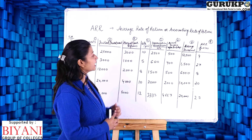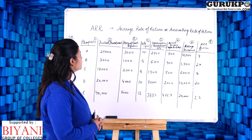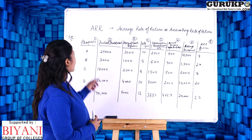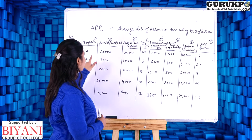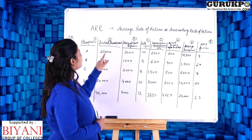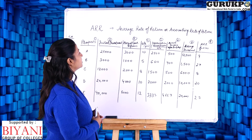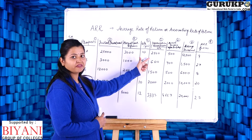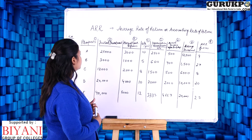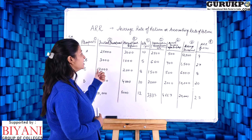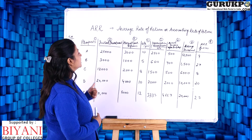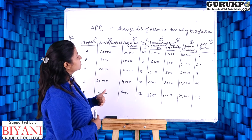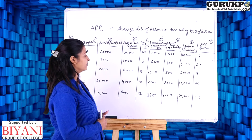The depreciation formula is: initial investment divided by life. For project A, initial investment is 25,000 divided by life 10, giving depreciation of 2,500. For project B, initial investment is 3,000 divided by life 5, giving depreciation of 600.